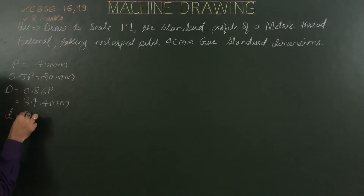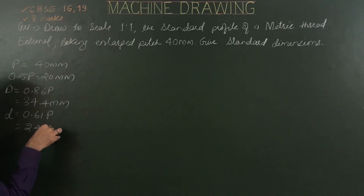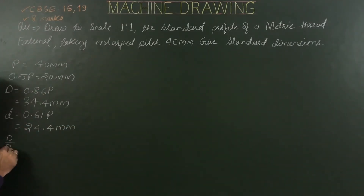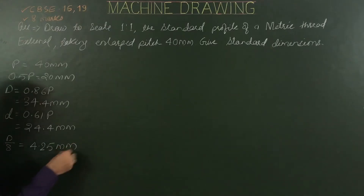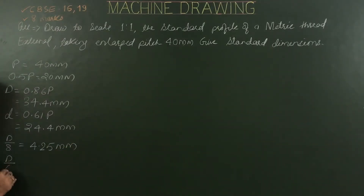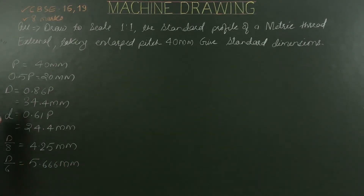Then small d is 0.61 of P, giving 24.4mm. Next, capital D by 8 is 4.25mm, and capital D by 6 is 5.66mm. So these are the standard dimensions calculated on the basis of the given pitch of 40mm.